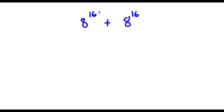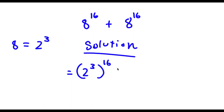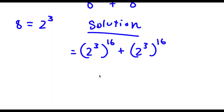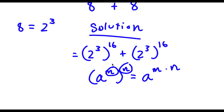Alright, so I have 8 to the power of 16 plus 8 to the power of 16. For my solution, 8 here is the same thing as 2 to the power of 3. So now if I go ahead and substitute in 2 to the power of 3 for 8, I get 2 to the power of 3 to the power of 16, plus 2 to the power of 3 to the power of 16. Now if I have something in the form a to the power of m to the power of n, this is the same thing as a to the power of m times n.